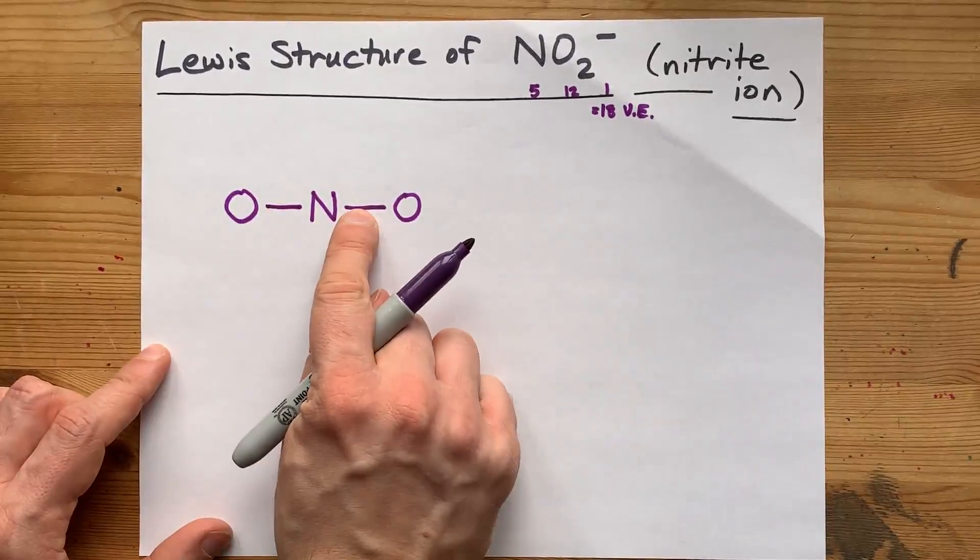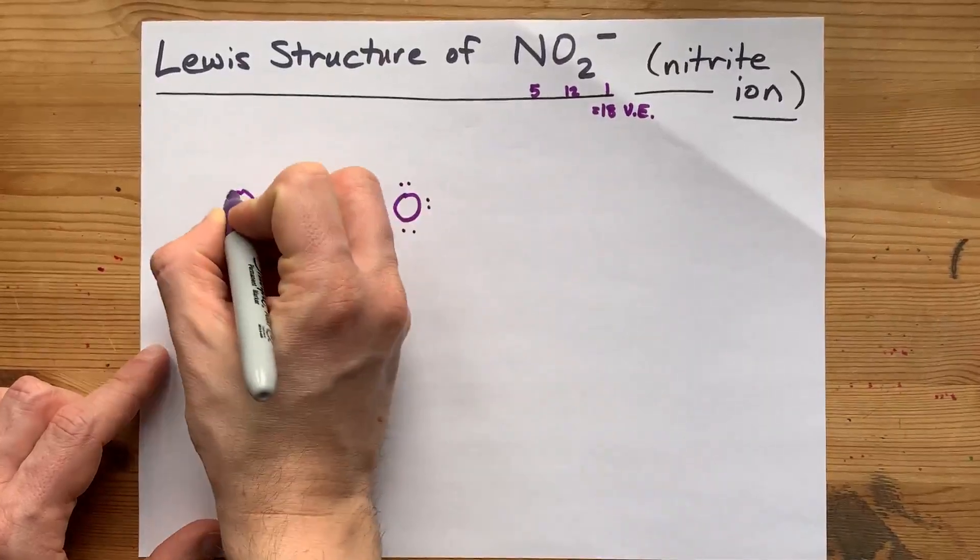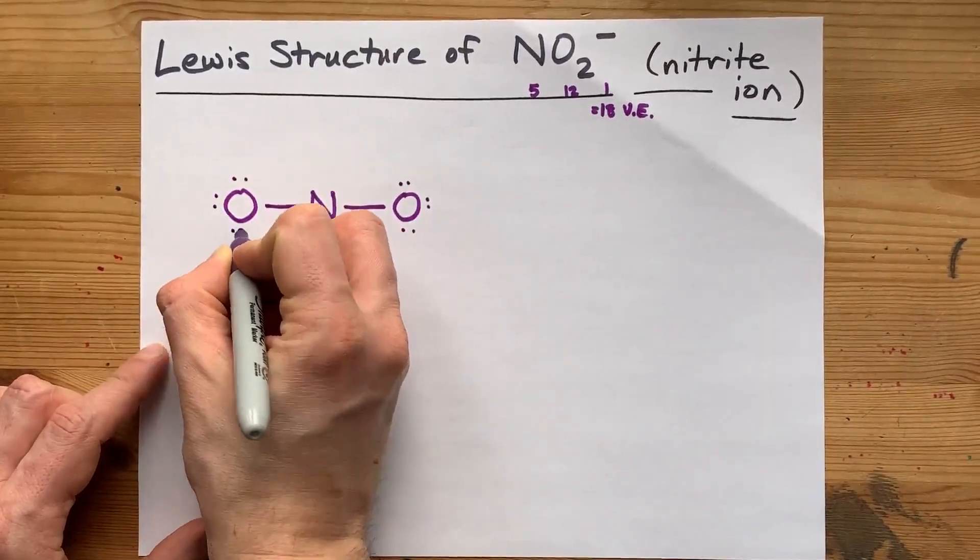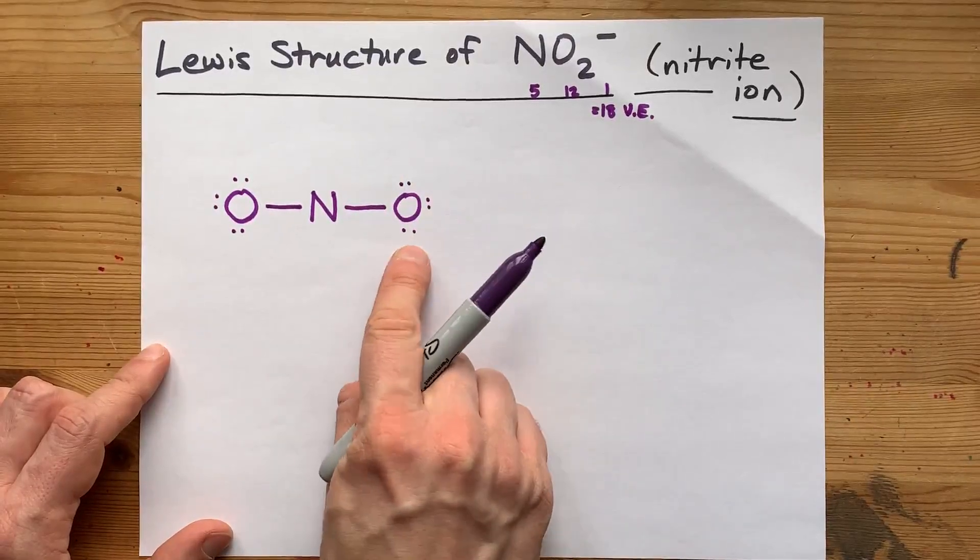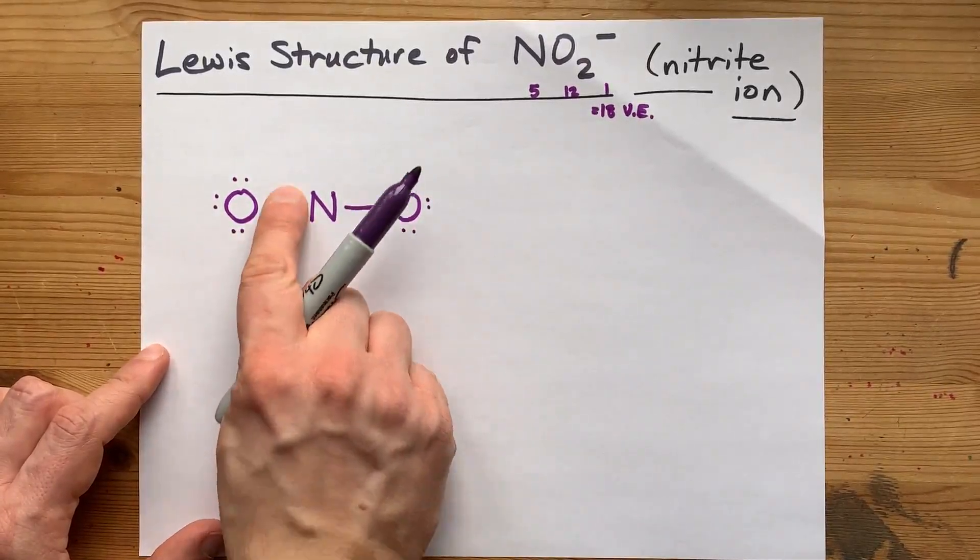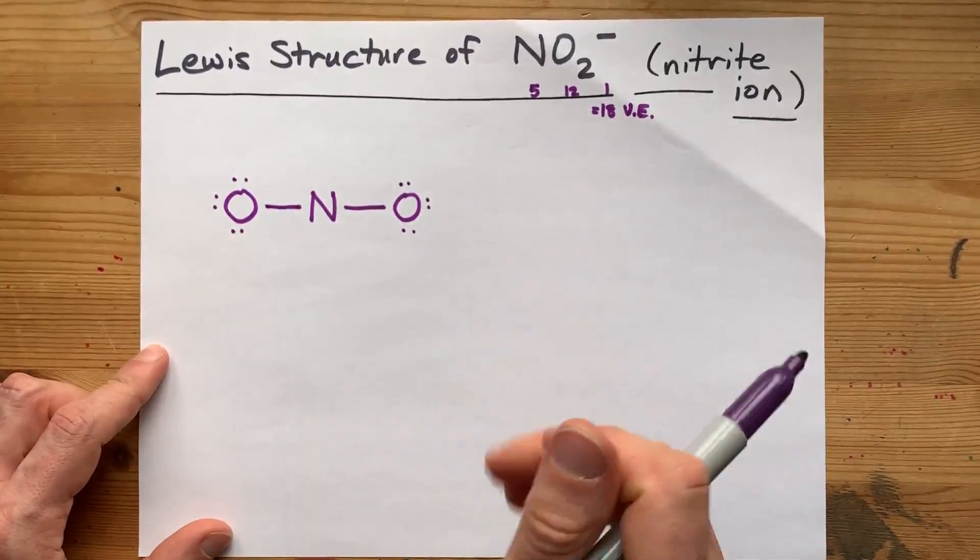Two, four electrons already accounted for, six, eight, ten, twelve, fourteen, sixteen. Now this oxygen has eight electrons around it, and this oxygen has eight electrons around it. That's sixteen electrons total.